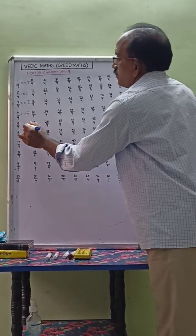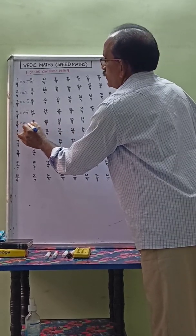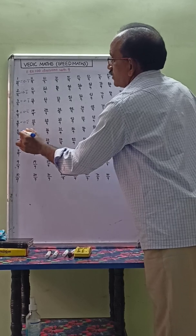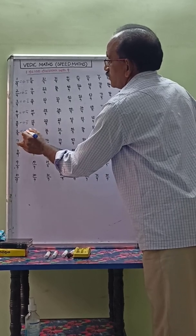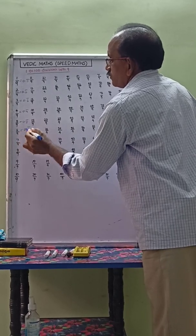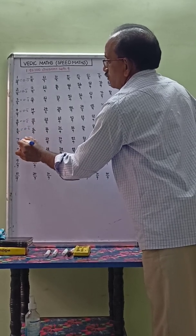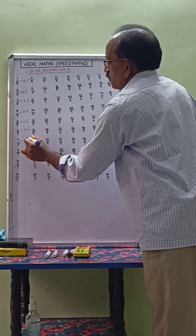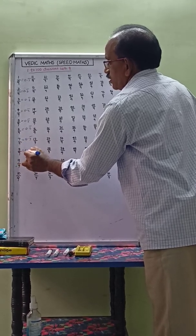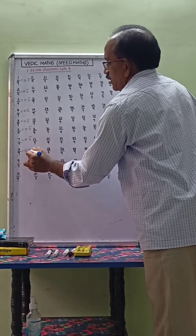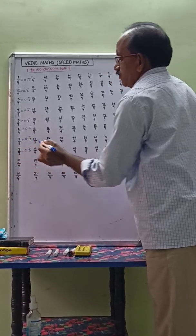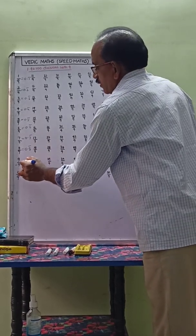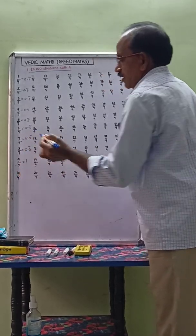5 by 9 equals 0.5 bar. 6 by 9 equals 0.6 bar. 7 by 9 equals 0.7 bar. 8 by 9 equals 0.8 bar. 9 by 9 equals 1.